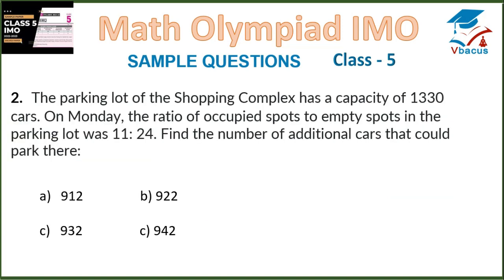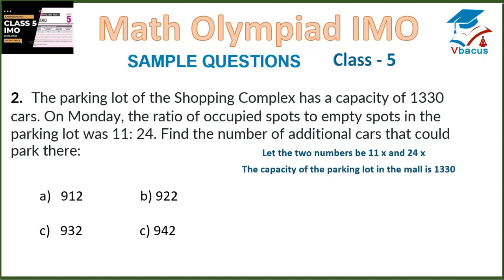Question number 2: The parking lot of the shopping complex has a capacity of 1330 cars. On Monday, the ratio of occupied spots to empty spots in the parking lot was 11 is to 24. Find the number of additional cars that could park there. Let the two numbers be 11x and 24x. The capacity of the parking lot is 1330, so 11x plus 24x is equal to 1330.